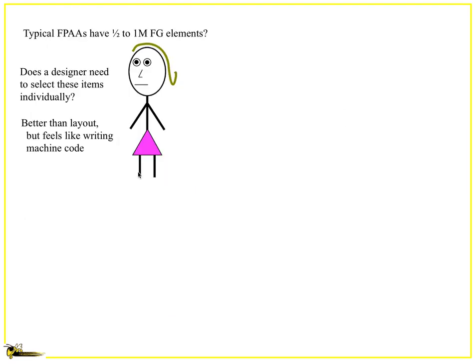A typical FPAA has around half to a million floating gate elements, which represents a lot of complexity. Does a designer need to go through and select these items individually, looking up tables and figuring things out? You might think that feels better than layout, but it feels kind of like writing machine code — which may still be better for analog and mixed-signal design, but it's still a fairly complex thing.